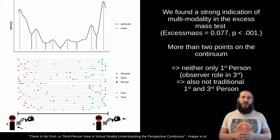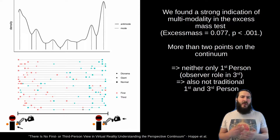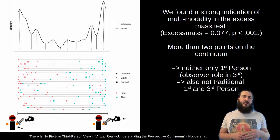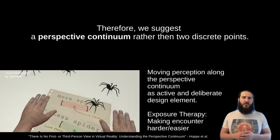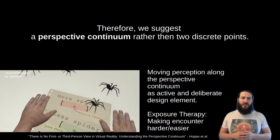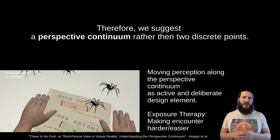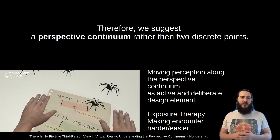We found that there are more than two points on this continuum. It's neither only first-person view, as you might have suspected because VR lends itself to first-person, nor is it a traditional understanding of first versus third-person. Therefore, we suggest a perspective continuum rather than two discrete points. Perspective as an active and deliberate design element could be interesting for future developers. Exposure therapy, for example, could give the client an easy start into the exposure — they could be disconnected from the character and then gradually increase the intensity and difficulty.